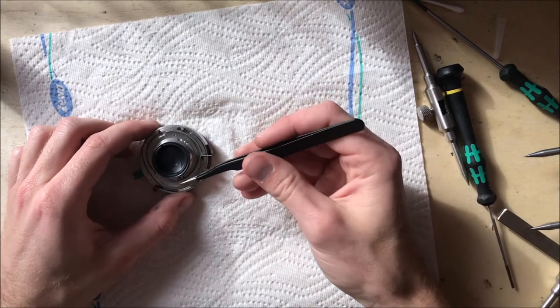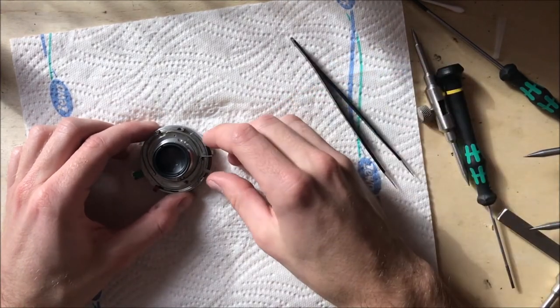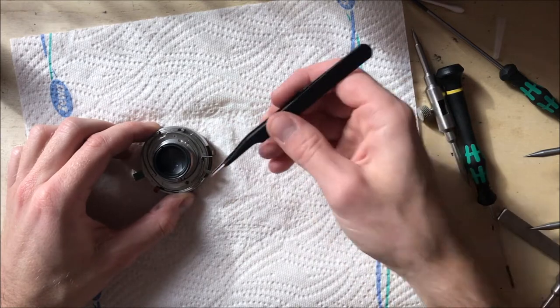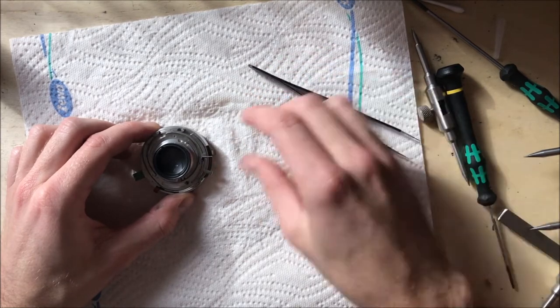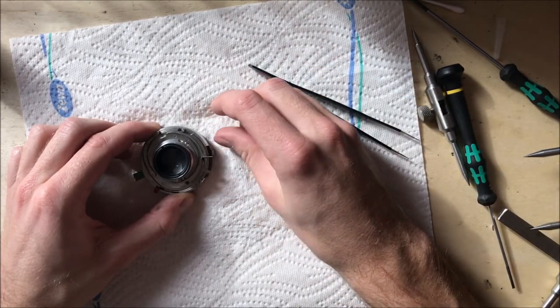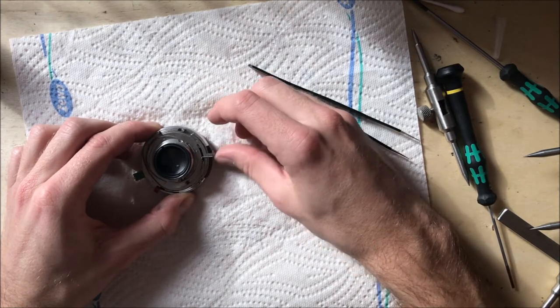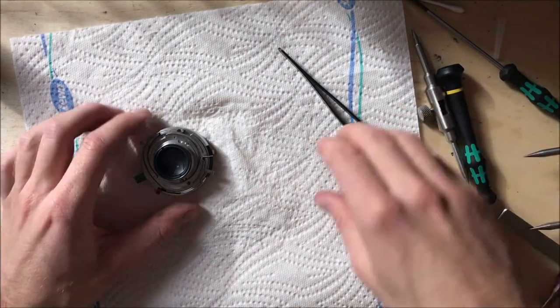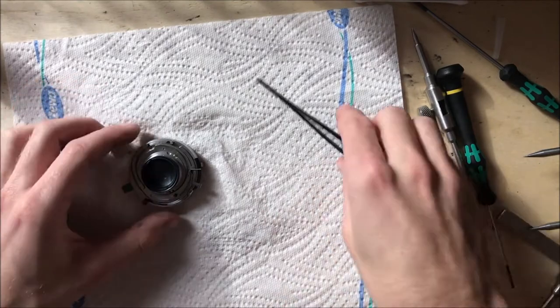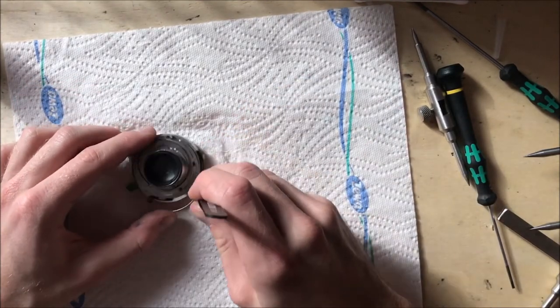The other is for stopping down the aperture automatically. You can see how this spring is bent while I tension this. Once you understand that, it's no big deal to put them back together in the same position.